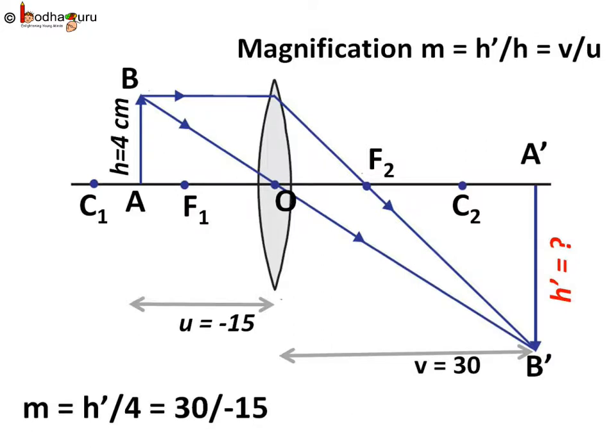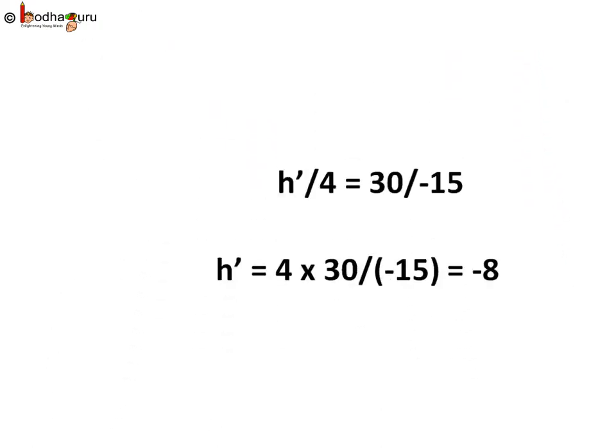So, we know H is equal to 4 cm, U is equal to minus 15 cm and V is equal to plus 30 cm. So, M is equal to H' by 4 is equal to 30 by minus 15. So, H' is equal to 4 into 30 by minus 15, which is equal to 120 by minus 15, which is equal to minus 8 cm.